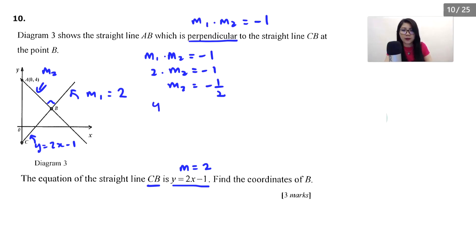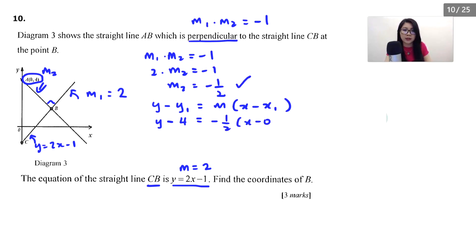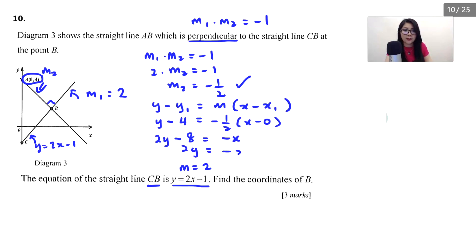We use the formula y minus y₁ equals m(x minus x₁). I use the known coordinate along line AB. So y minus 4 equals negative 1/2 times (x minus 0). Bringing the 2 to the left: 2y minus 8 equals negative x. Therefore 2y equals negative x plus 8. This is equation 1.